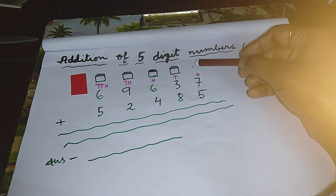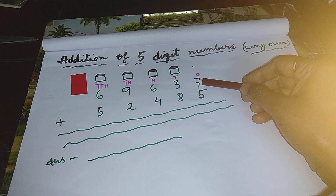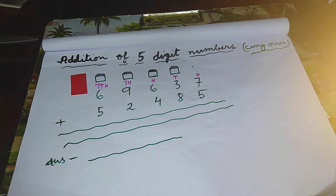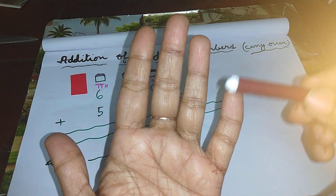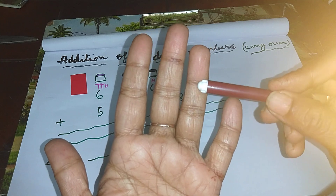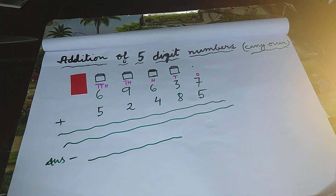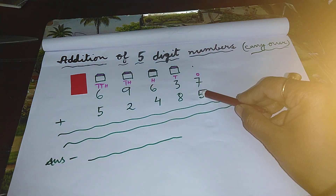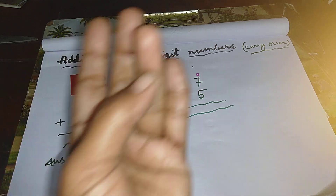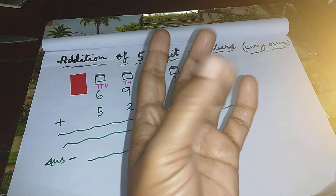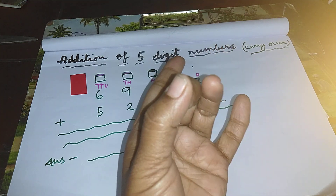In the one's column, the first digit is seven, so count seven lines: one, two, three, four, five, six, seven. The next digit is five, so count more five lines from the next line: one, two, three, four, five.